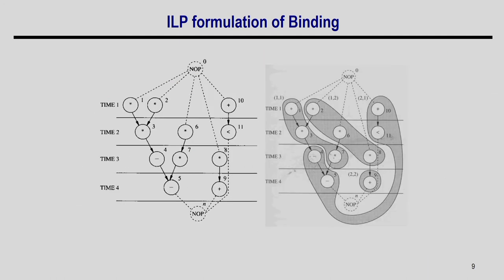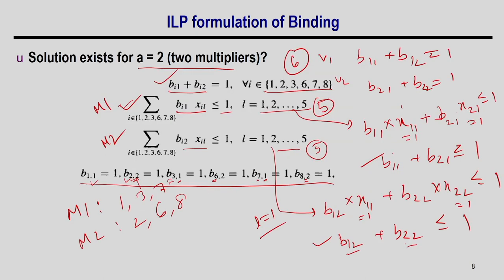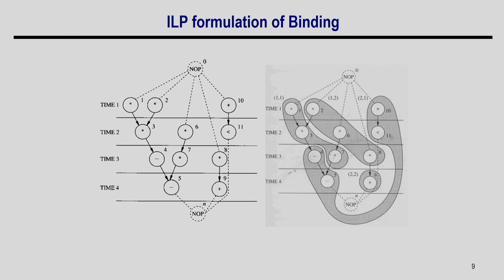Examining the result: operations 1, 3, 7 execute on multiplier 1; operations 2, 6, 8 on multiplier 2. There are no conflicts — this ILP also gives the correct solution.